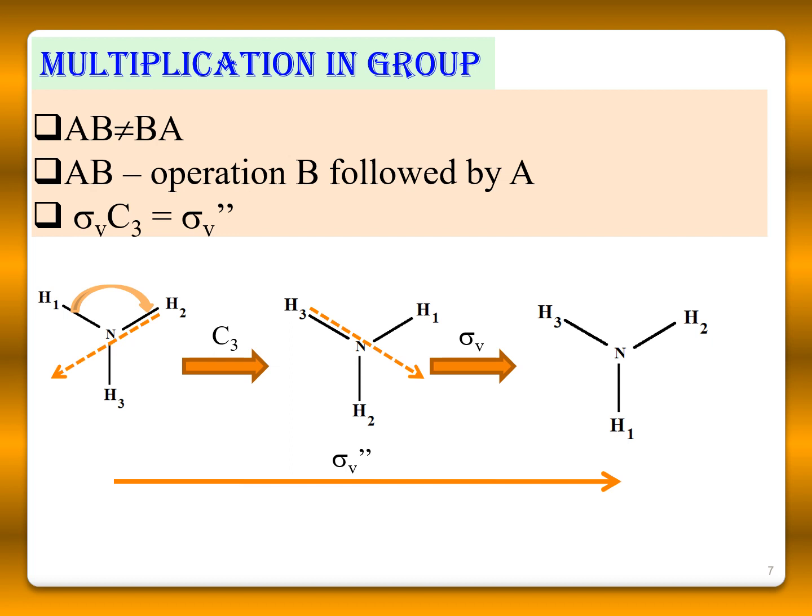In all cases, group multiplication is very important. If you take two operations in a group, AB is not equal to BA because A is a different operation and B is a different operation — it's not a number, it's an operation. So, if you take AB, the operation B is performed first, followed by A.